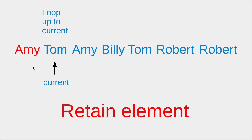After I have retained Amy, I would move my current index to another element in the ArrayList. Then I would loop over the elements from the very beginning to the one indicated by the current index. Tom is not repeated beforehand, so I would retain the element in the ArrayList.